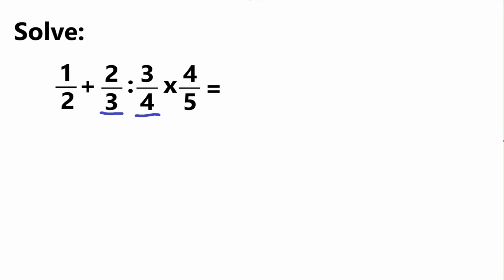So instead of dividing by 3 fourths, what you can do is multiply times 4 thirds. You can multiply by the reciprocal. The reciprocal is when you flip the numerator and denominator.